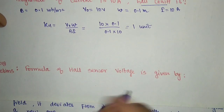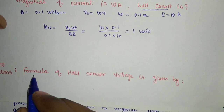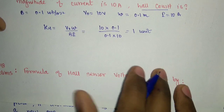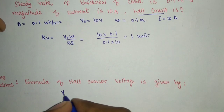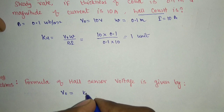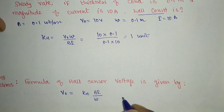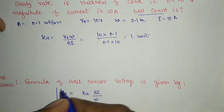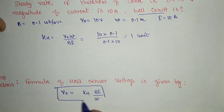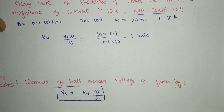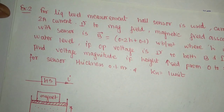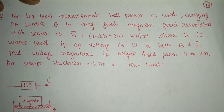In 2018 prelims, there was a question regarding the formula for Hall sensor voltage. The formula is V0 = KH·B·I/W (or T). That was asked directly in our prelims. Also, as mentioned initially, in 2019 the working of the Hall sensor was asked. So both of those topics we have discussed here. Now let's see a few more questions and then we will finish this topic.